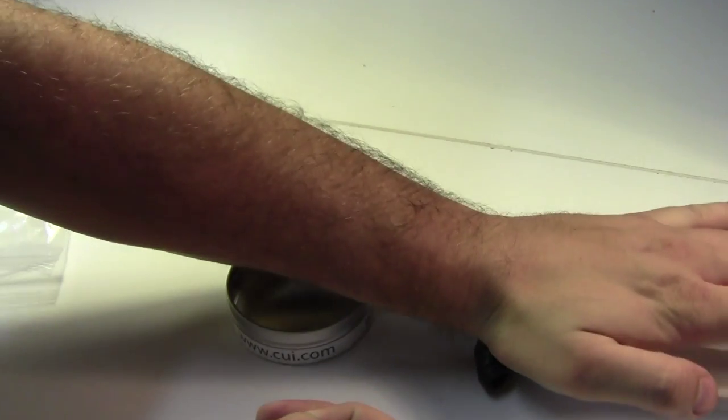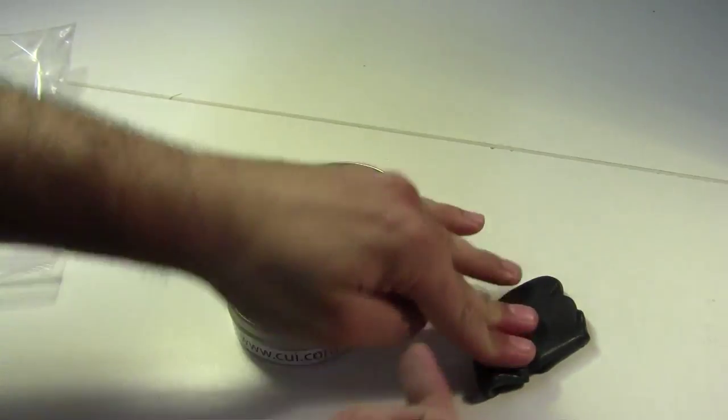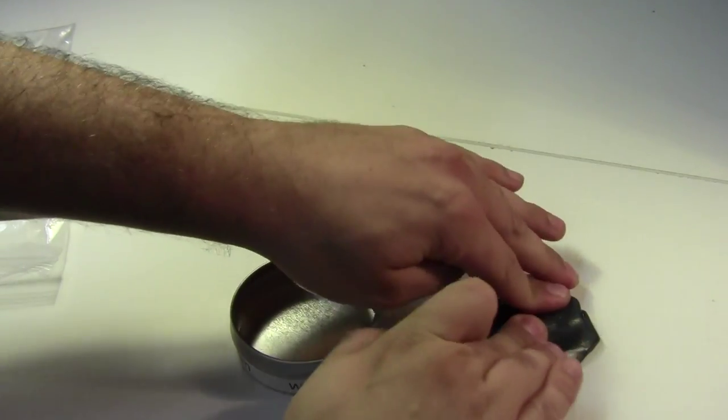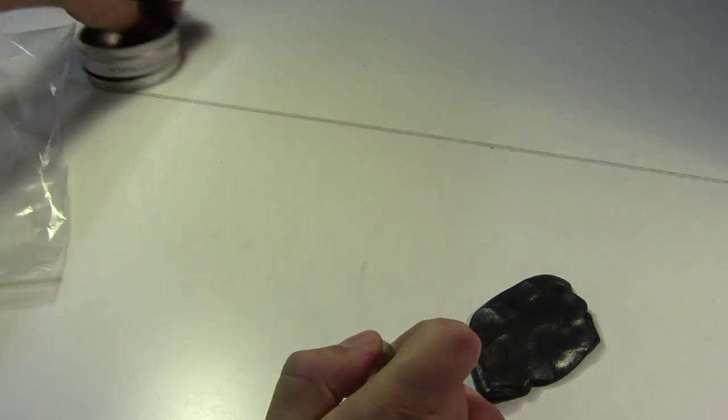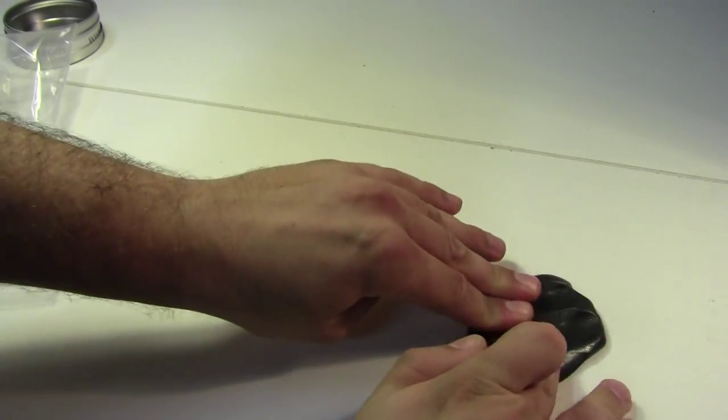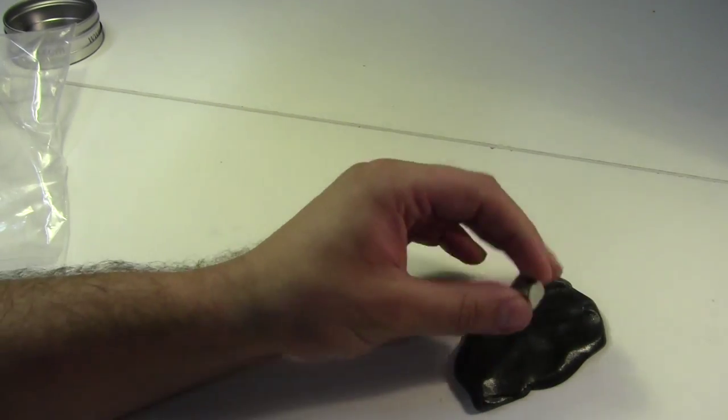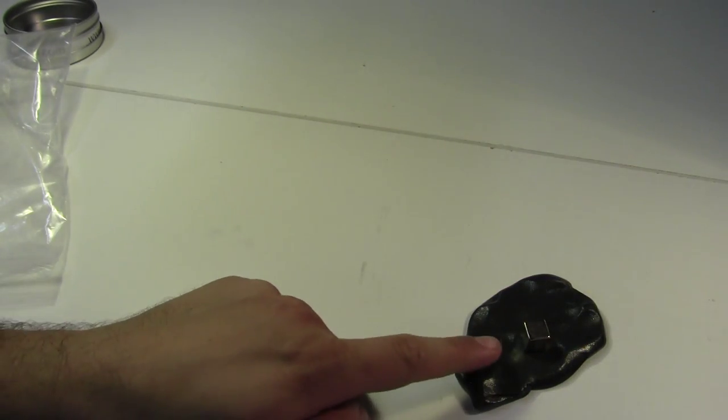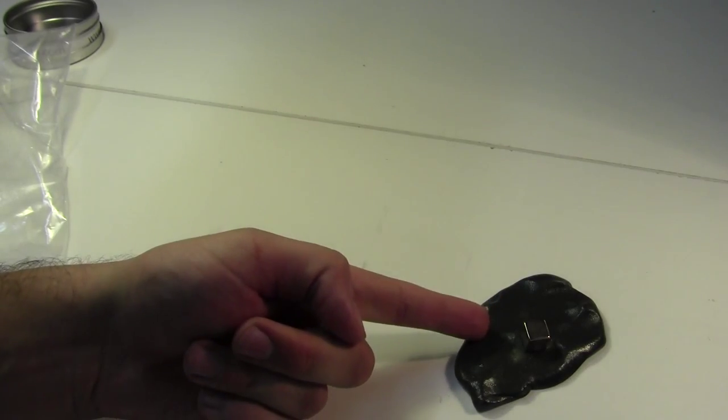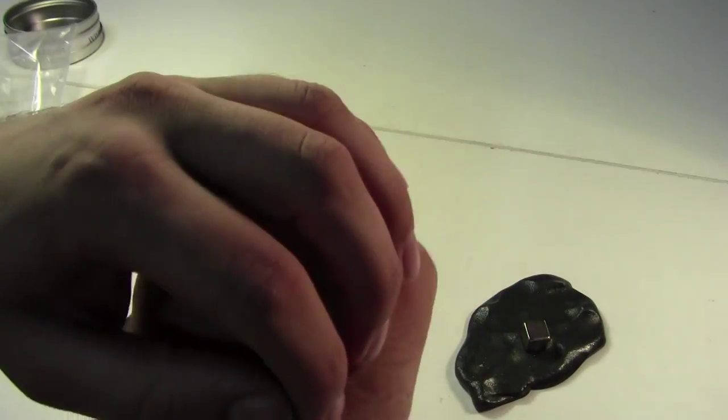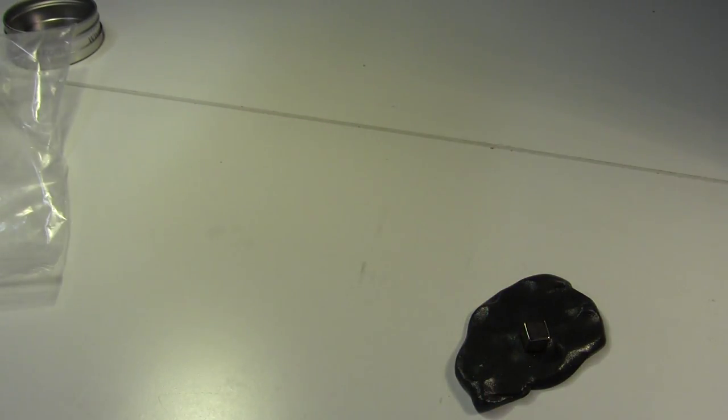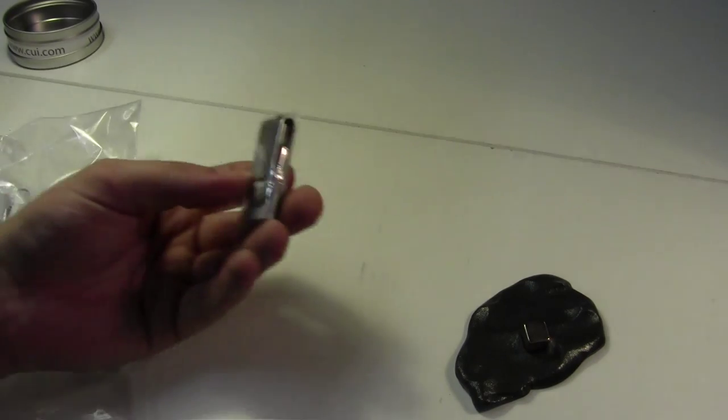And so, what you can do is you can flatten out the silly putty on your table. And then you take a magnet and you drop it on it. And then it'll actually suck itself into the silly putty. And the silly putty will curl up around it and engulf it. So, that stuff's super fun. I was playing with this for about an hour before recording the video. So, we'll just let that sit there in the background.